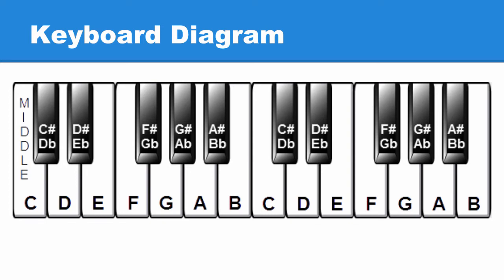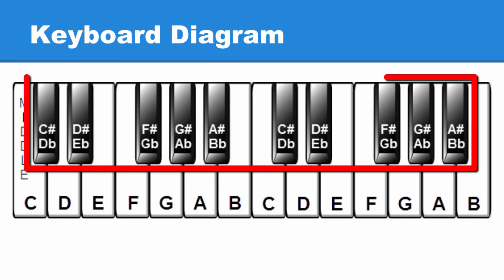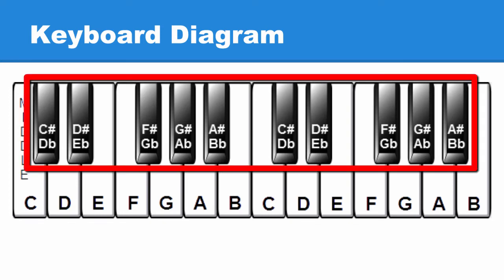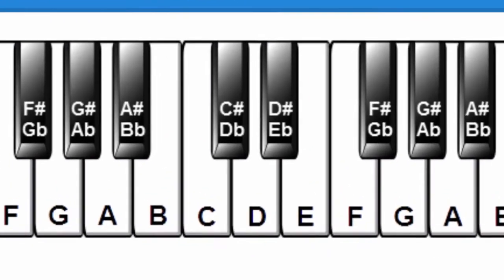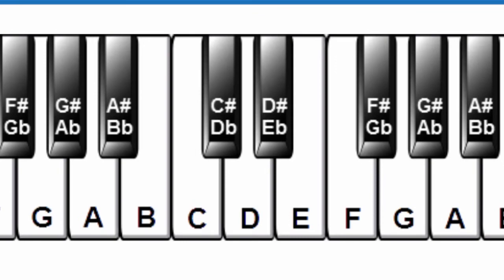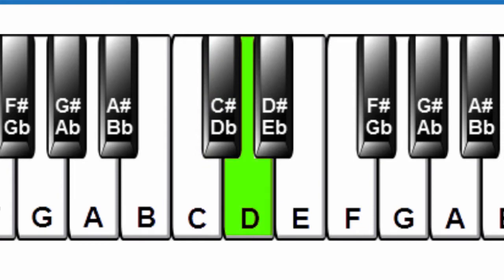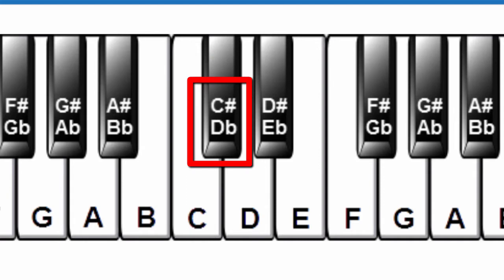Until now, the keyboard diagram has shown only the black keys with more than one note name, known as enharmonic note names. For example, add a sharp to C and it becomes C sharp. Add a flat to D and it becomes D flat. Two different note names for this same key — enharmonic note names.